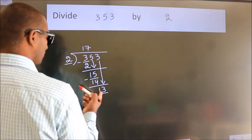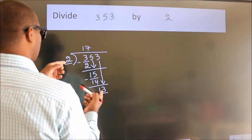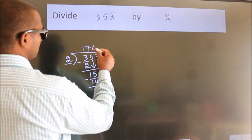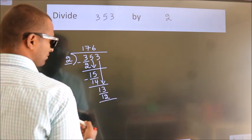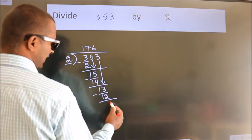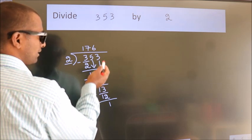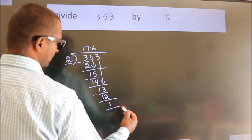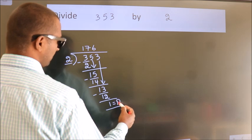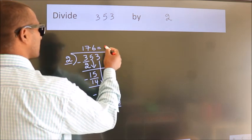A number close to 13 in the 2 table is 2 sixes 12. Now we subtract and get 1. No more numbers to bring down, so we stop here. This is our remainder. This is our quotient.